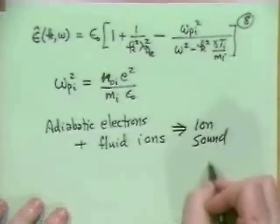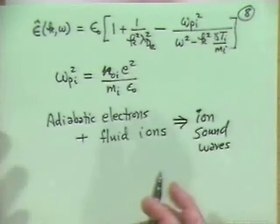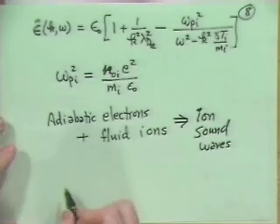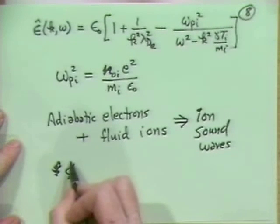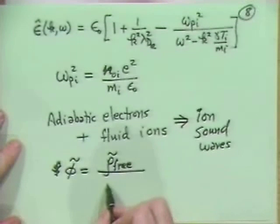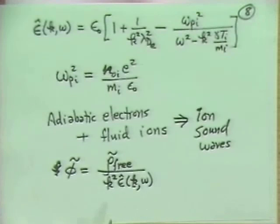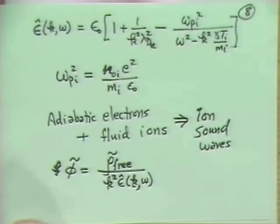To continue our consideration of ion sound waves — that's what we're trying to derive. You remember that we had previously that the potential we obtain is equal to the free charge perturbation we might introduce into the system, divided by k squared epsilon hat of k and omega. Basically, if we set epsilon to zero, what we are doing is finding the normal modes of the plasma, which effectively requires no excitation.